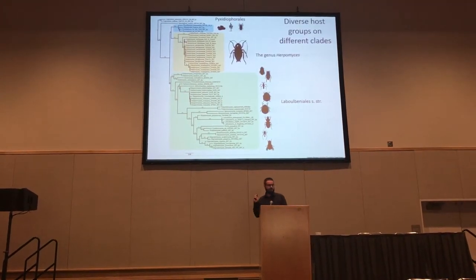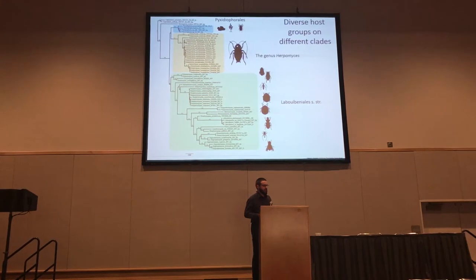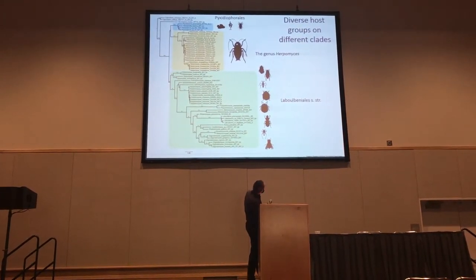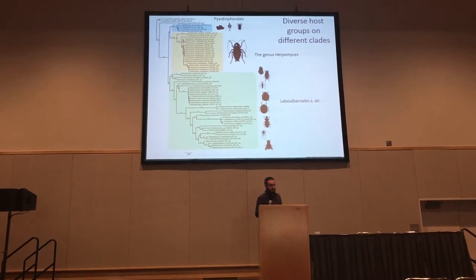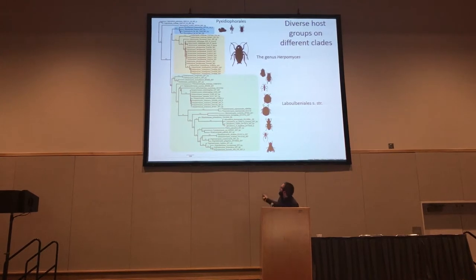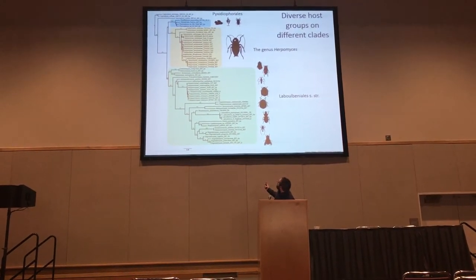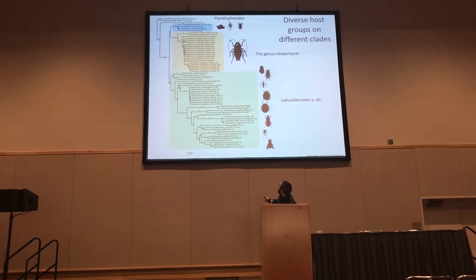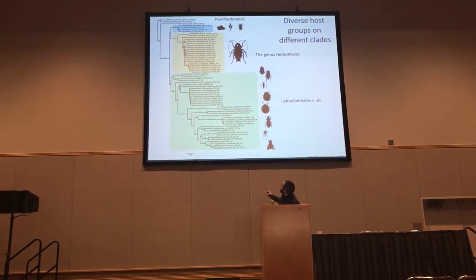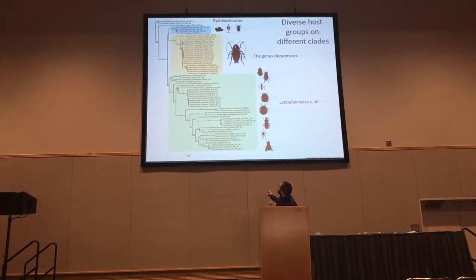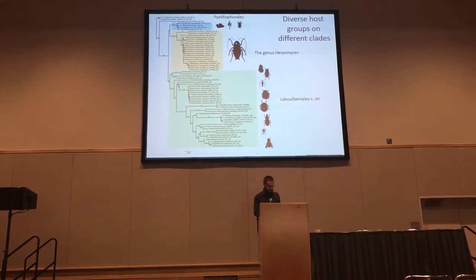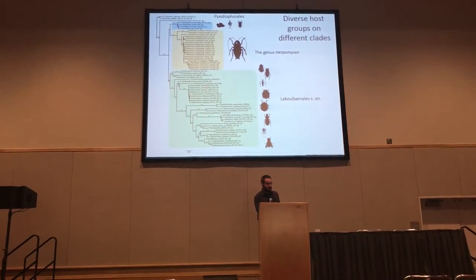When we look at the different hosts for the different clades, it is apparent that Laboulbeniales sensu stricto does not show a very high degree of co-diversification with the insects. For example, we have beetles on the Laboulbeniales tree as hosts in several different clades, and we have Heteroptera — true bugs — as hosts in multiple clades as well. So there is no sign of strict co-diversification between the hosts and the parasites.